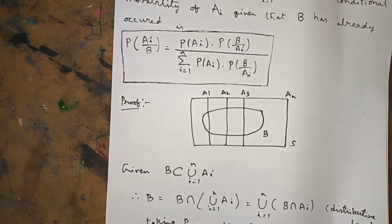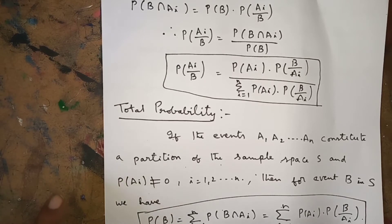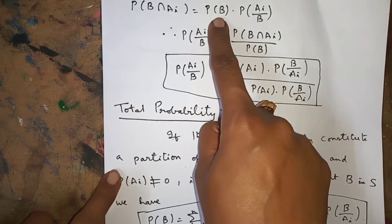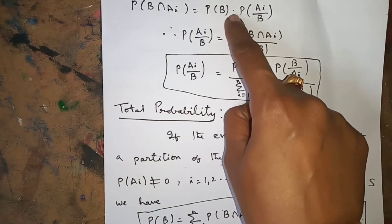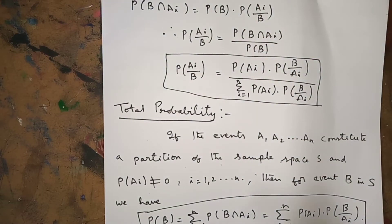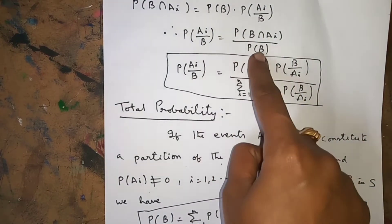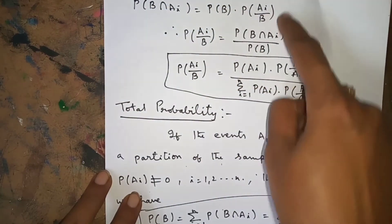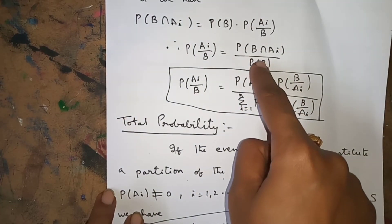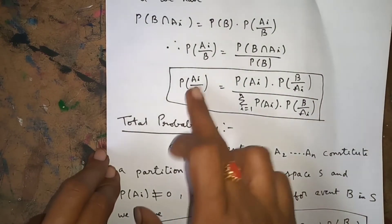To complete the proof: by the multiplication theorem, P(B ∩ Aᵢ) can be written in two forms. We have P(B ∩ Aᵢ) = P(B) · P(Aᵢ|B). Cross-multiplying: P(Aᵢ|B) = P(B ∩ Aᵢ) / P(B). Substituting P(B ∩ Aᵢ) = P(Aᵢ) · P(B|Aᵢ) in the numerator, and replacing P(B) with Σᵢ₌₁ⁿ P(Aᵢ) · P(B|Aᵢ) in the denominator — hence the proof.